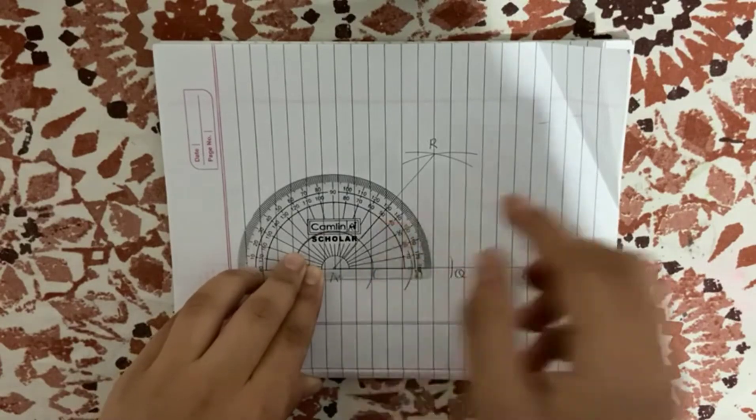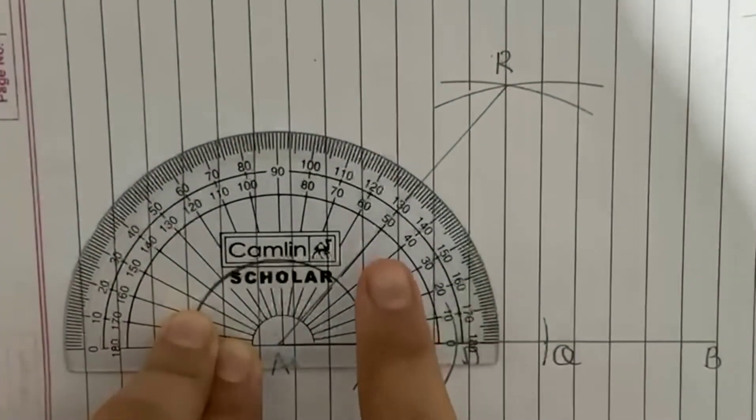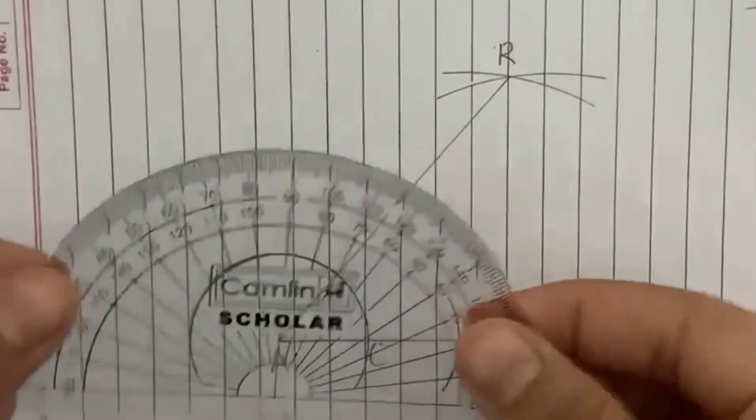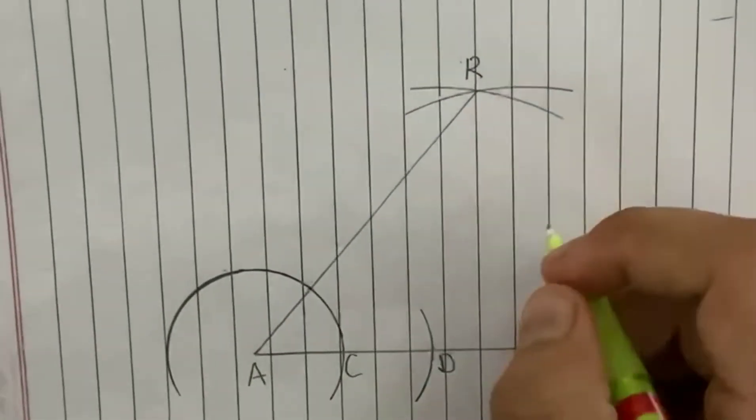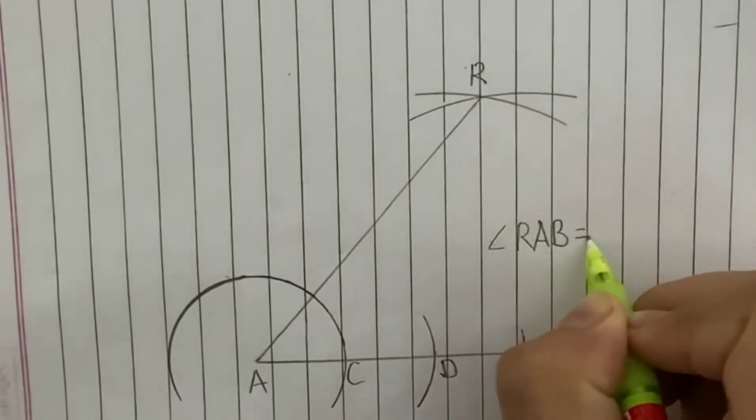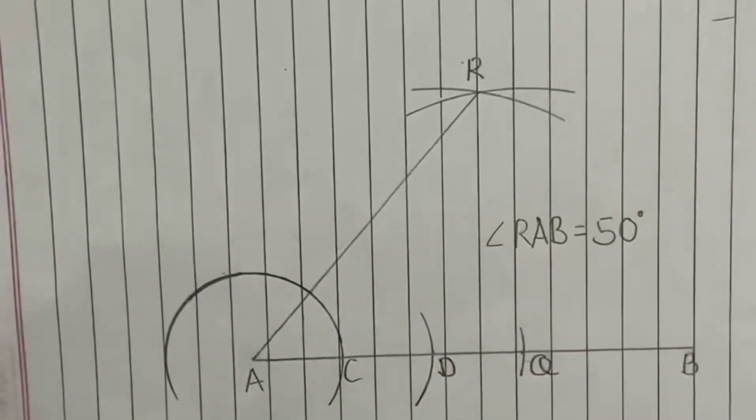And yeah, you can see it is 50 degrees, and so the angle RAB equals 50 degrees.